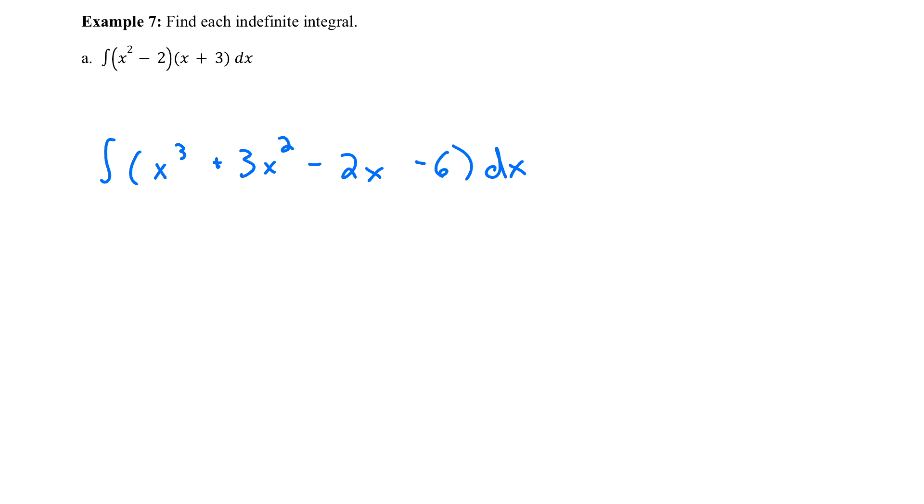At this point, if you could simplify it or combine any like terms, I would definitely go ahead and do that. In this case we don't though. So we can just go ahead. Every single one of these is a power rule. I can just add 1 to the power and divide by the power. So x³, I'll add 1 to the power. It's now x⁴ divided by my new power of 4.